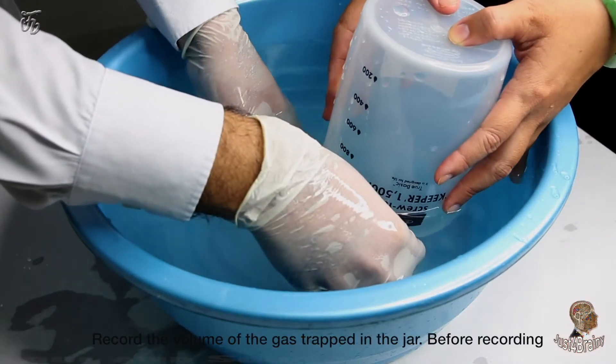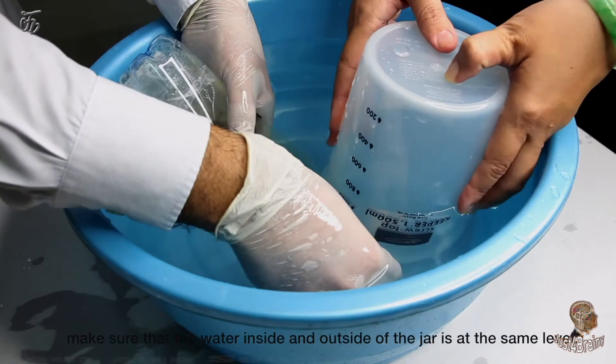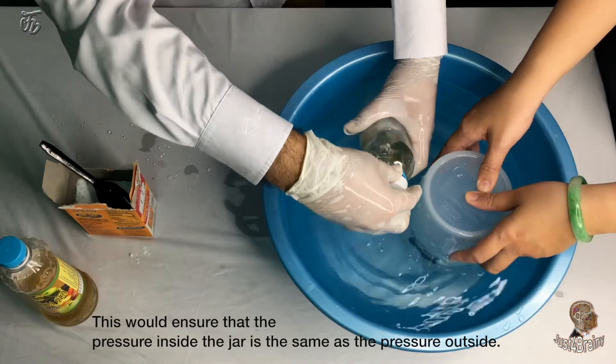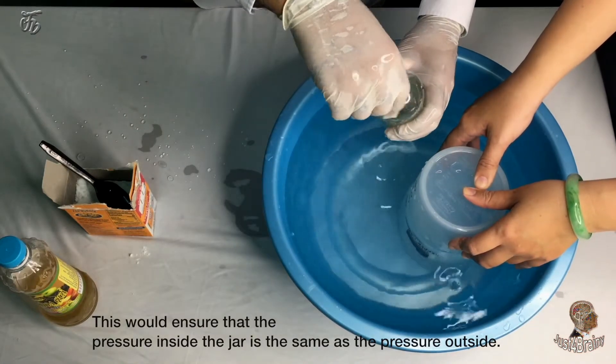Record the volume of the gas trapped in the jar. Before recording, make sure that the water inside and outside of the jar is at the same level. This would ensure that the pressure inside the jar is the same as the pressure outside.